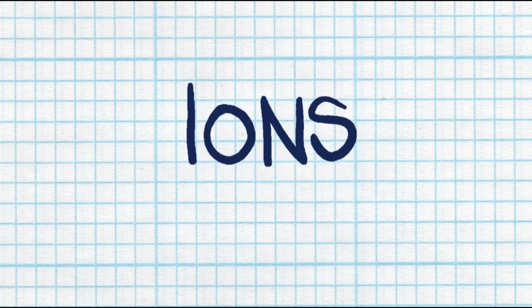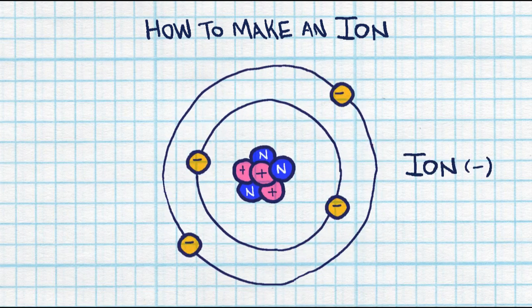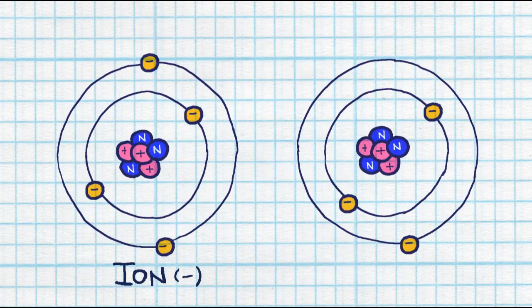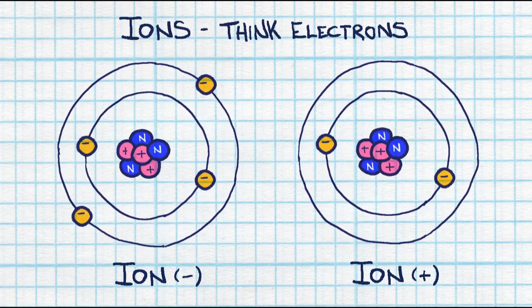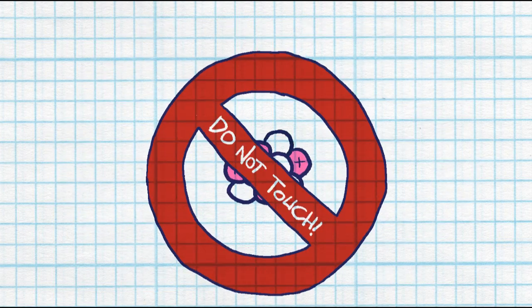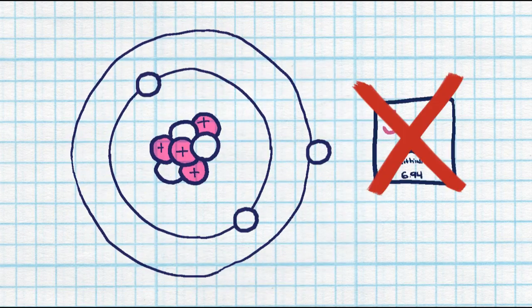If you're asked to make an ion, that means you're asked to make an atom that has a charge on it, either positive or negative. You're only going to be adding and removing electrons. When you hear ion, think electron. We don't ever touch the protons, because as soon as you change the number of protons, you're changing the element.